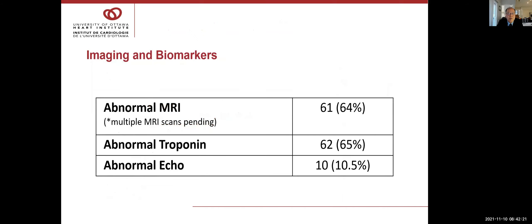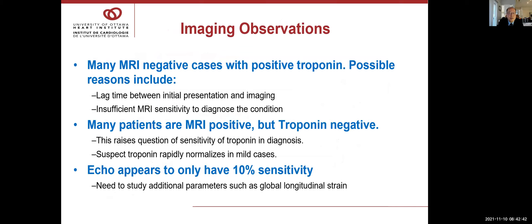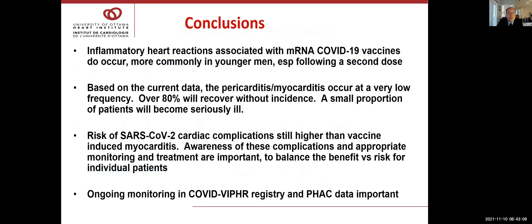About two-thirds of patients have abnormal MRI, but not everyone. Similarly, about two-thirds have abnormal troponin, but not everyone, since some patients have positive MRI and echo without elevated troponin. The pattern of MRI findings appears quite similar to regular myocarditis. Brighton's requirement of both MRI and troponin being positive applies to only about 25% of cases.